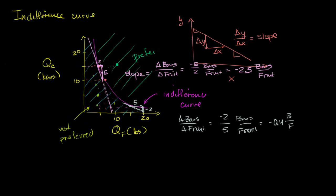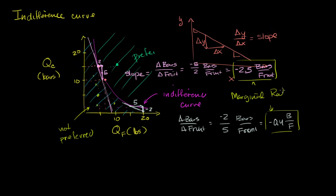This number — how many bars you're willing to give up for an incremental unit of fruit at any point along the curve, or equivalently the slope of the tangent line at that point of the indifference curve — is called the marginal rate of substitution. It's a very fancy term, but all it's really saying is how much you're willing to give up of the vertical axis for an increment of the horizontal axis, right at that point. And it changes as you move along the curve, because the curve's slope is always changing.